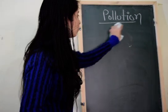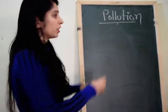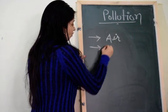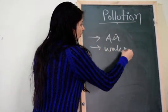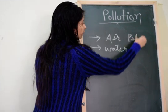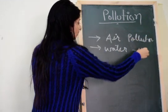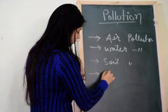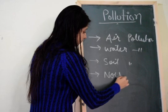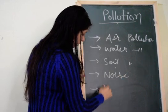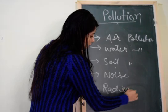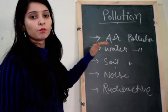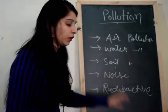Now, the kinds of pollution: when we talk about different types of pollution, it can be divided into different types. For example, air pollution, water pollution, soil pollution or land pollution, noise pollution, and radioactive pollution. All these are the main types related to pollution.